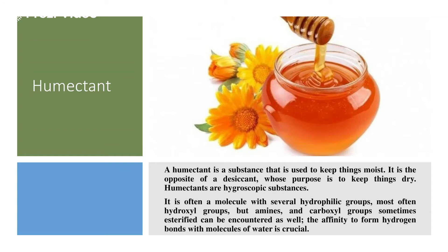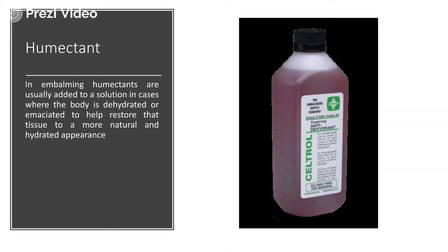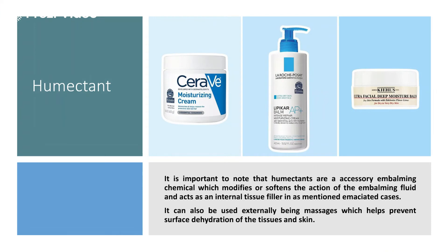Humectants are opposite to desiccants. Desiccants are substances which keep things dry, so humectants and desiccants are opposite to each other. Humectants are hygroscopic substances. Considering their molecular structure, they comprise several hydrophilic groups — hydrophilic meaning water-loving — as well as hydroxyl groups. Amines and carboxyl groups, sometimes esterified, can be encountered as well. Humectants are usually added to formulations to keep them moist and to help retain moisture content, so the formulation appears to provide a hydrated appearance to the skin. Also, humectants are accessory chemicals which modify or soften the action of embalming fluids and act as internal tissue fillers.